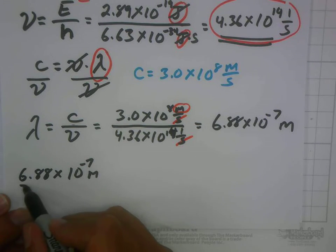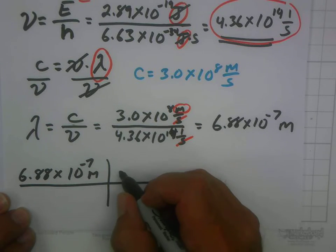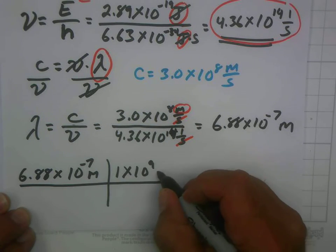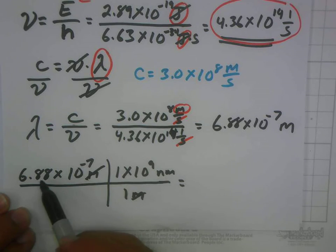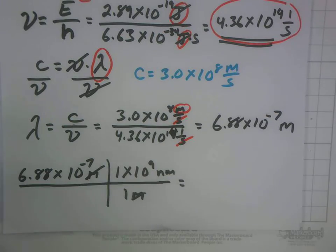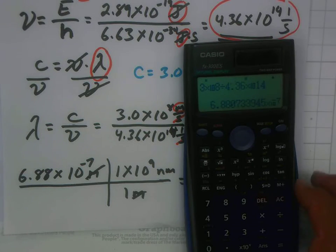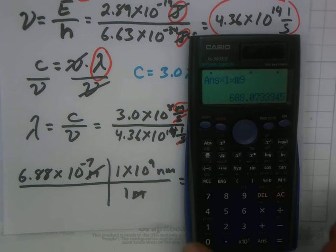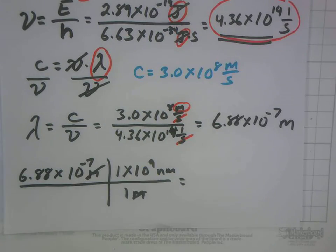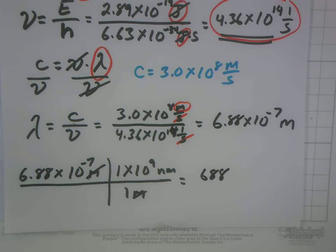We have 6.88 times 10 to the minus 7th meters. Nano means one billionth, so there are 1 times 10 to the 9th nanometers in 1 meter. We cancel out meters and multiply: 6.88 times 10 to the minus 7th times 1 times 10 to the 9th gives us 688 nanometers.